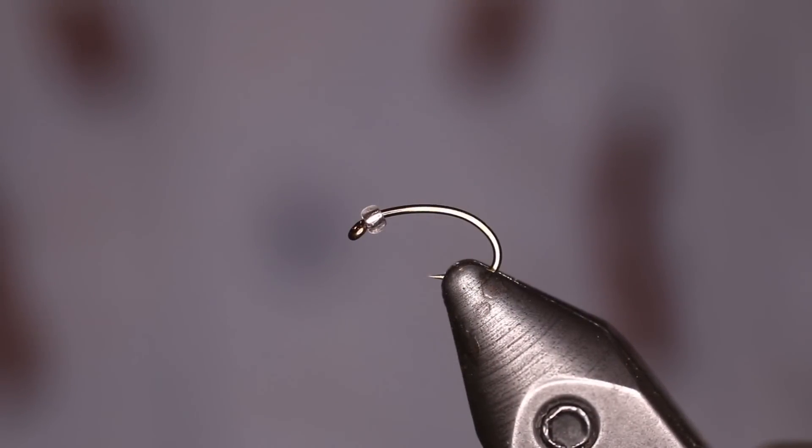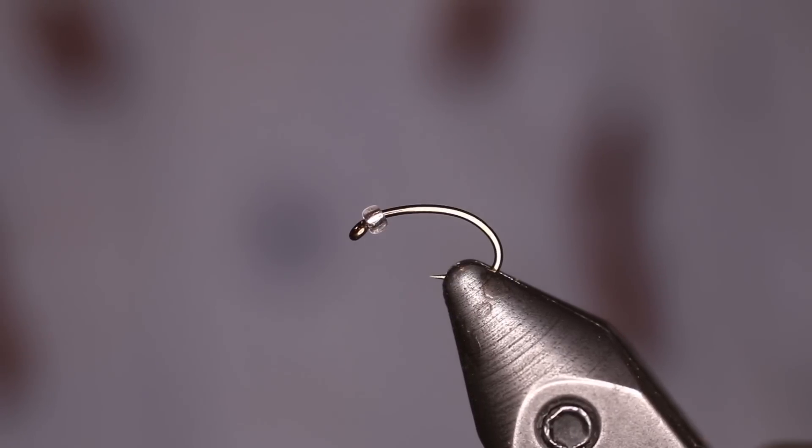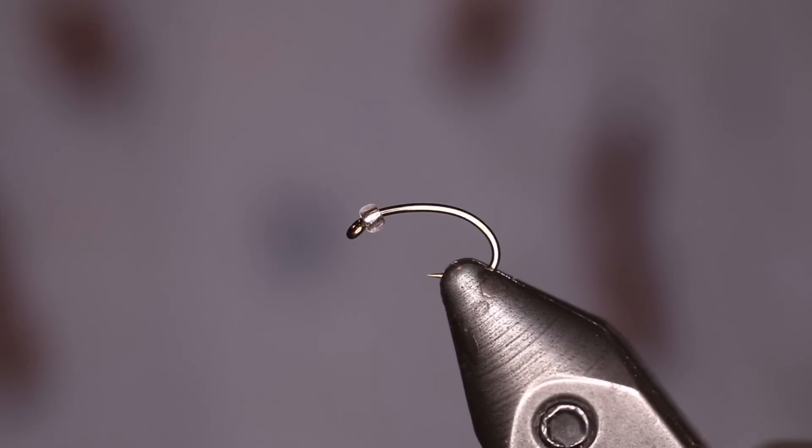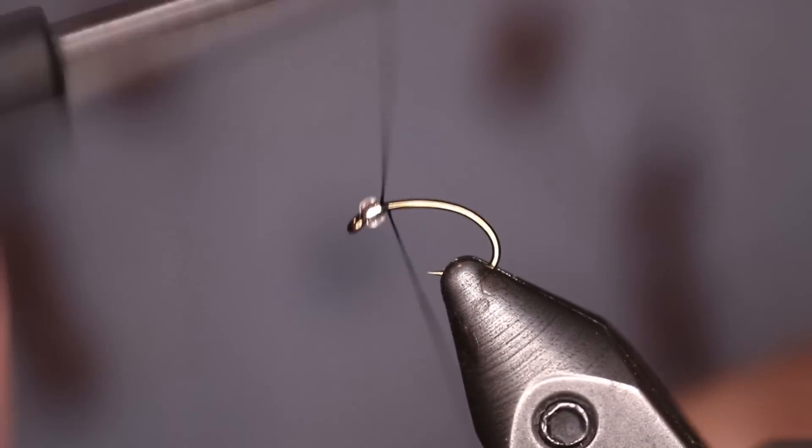Today we're going to be tying a flashbang midge. We're using a Daiichi 1120 in a size 16. Our bead is a quicksilver glass bead from Spirit River. The thread we're using is a UTC 70 in black.